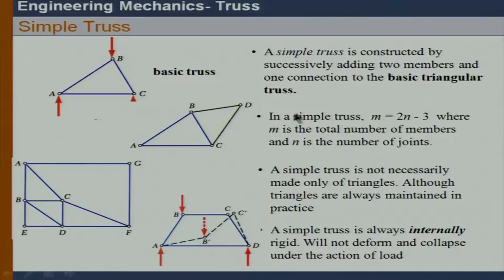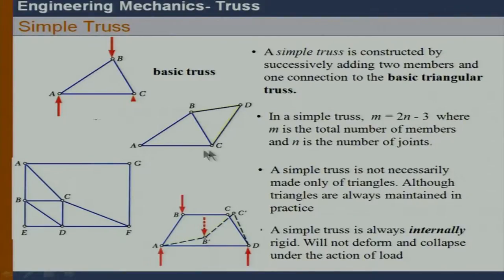The basic rule for a simple truss is M equals 2N minus 3, where M is the number of members and N is the number of joints. You can always use this simple thumb rule to verify that it is a simple truss.